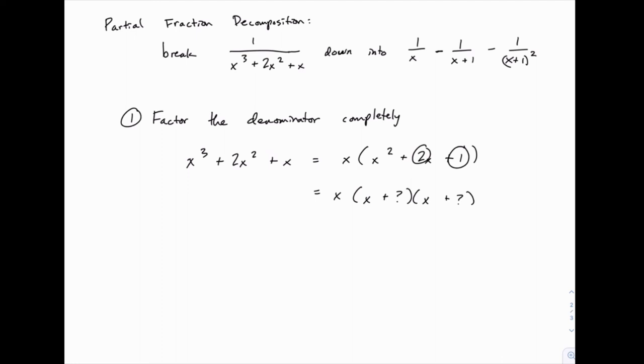Because when you expand this out, this constant term at the end is what you get when you multiply the two unknown values here. And the coefficient of x is what you get when you add them together, because they're each being multiplied by x and then combined.